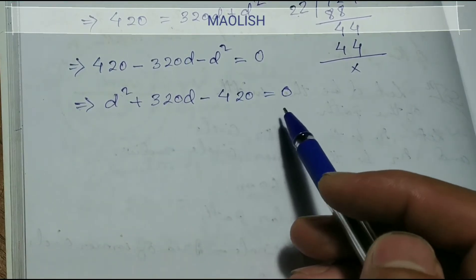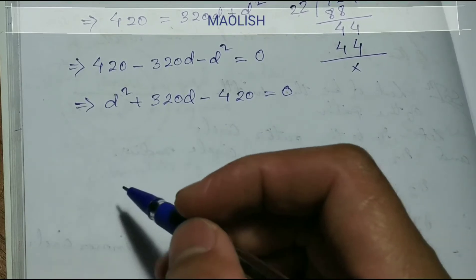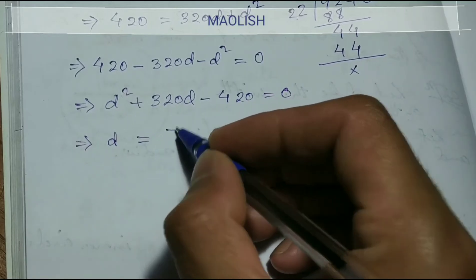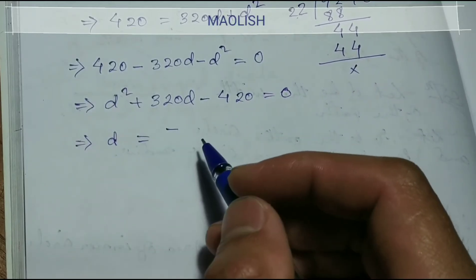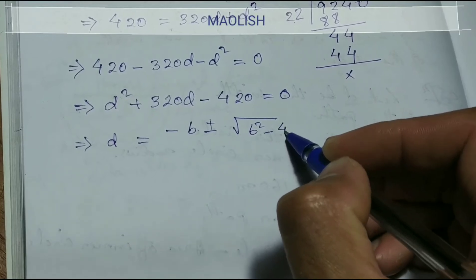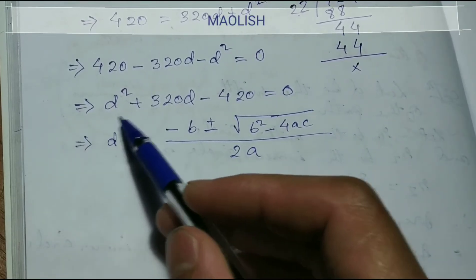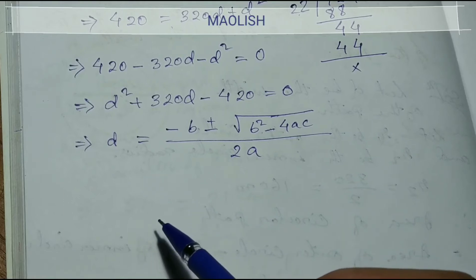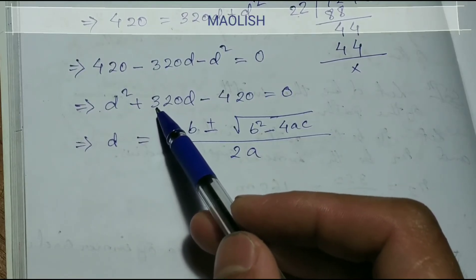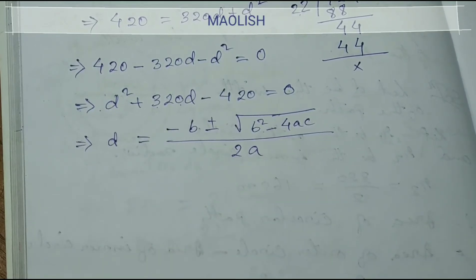Dividing both sides by 22: 9,240 ÷ 22 = 420. So 320d + d² = 420. Rearranging to standard quadratic form by transposing: d² + 320d − 420 = 0. This is a quadratic equation. Using the quadratic formula: d = [−b ± √(b²−4ac)] / (2a), where a = 1, b = 320, c = −420.